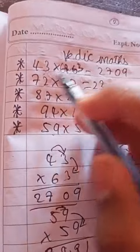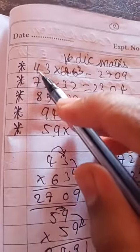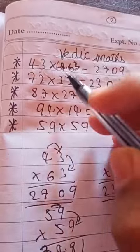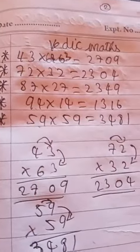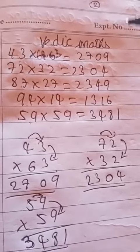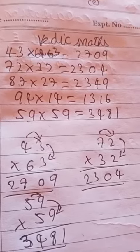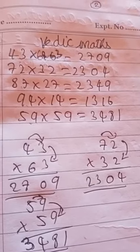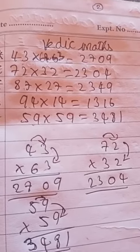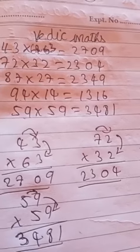The same number is added to the 4th plus 6th — 10. This is the same number. We can see it: the same number is on the right side, and the same number is on the left side. Let's go to the video.